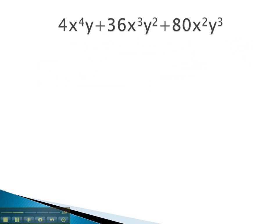In this problem, we see that the 4, 36, and 80 are all divisible by 4. There is also an x squared that we can factor out, along with a y.